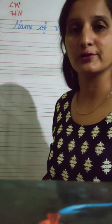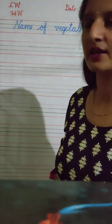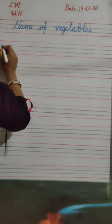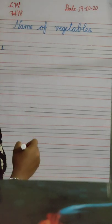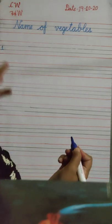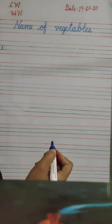Hello students, good morning. Welcome to our English class. Today I will teach you the names of vegetables. You have learned the names of vegetables in GK and in Oral. Now you will write and learn the names of vegetables in English. So let's start writing the names of vegetables. Number 1 — we eat many vegetables and now we will write the names of these vegetables.